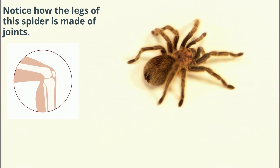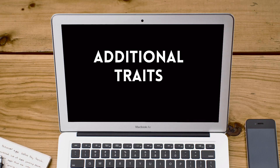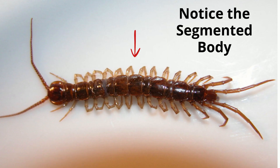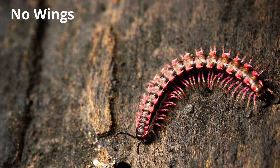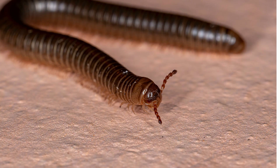In addition, Myriapods have these traits: many legs, ranging from 750 to a little bit more than 10; one pair of antennae; and no wings.